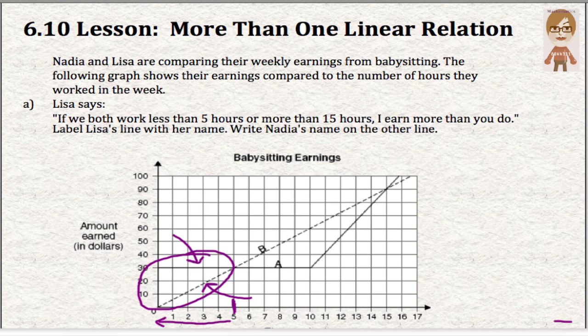I want you to notice which one is higher. The amount earned up the side is actually how much money they're making. And so the line that is higher is somebody that's going to make more. So the solid line must be Lisa.